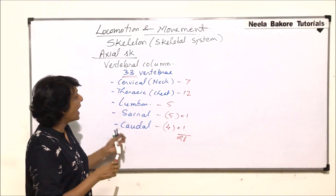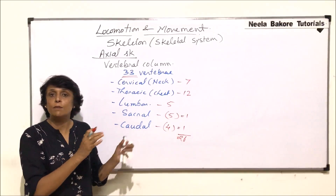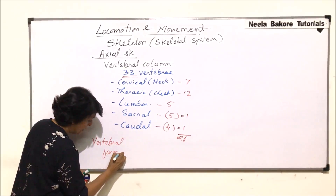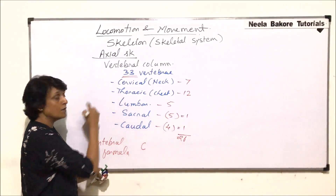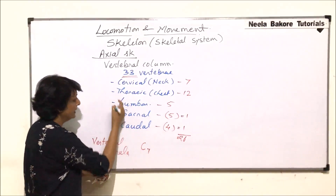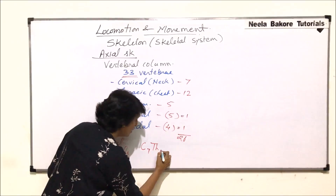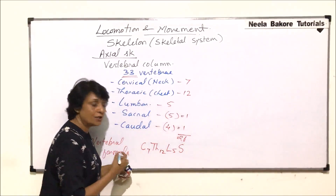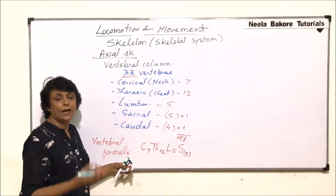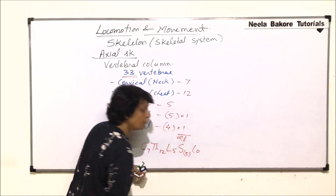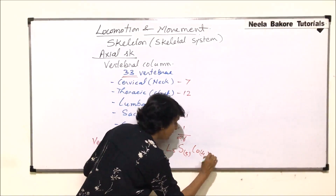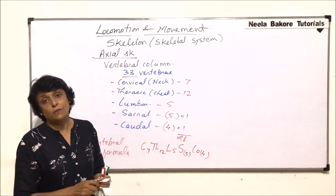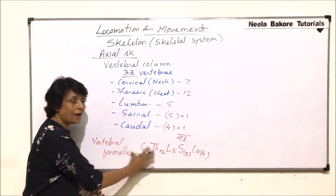The vertebral column can be represented by a vertebral formula: C7 for cervical, T or Th 12 for thoracic, L5 for lumbar, S(5) for sacral — in brackets to remind us they are fused — and Co(4) for caudal, also in brackets to remind us these four vertebrae are fused to form one piece.